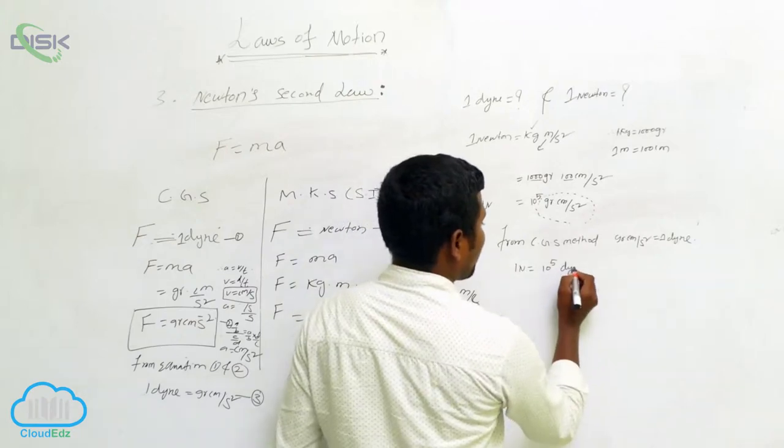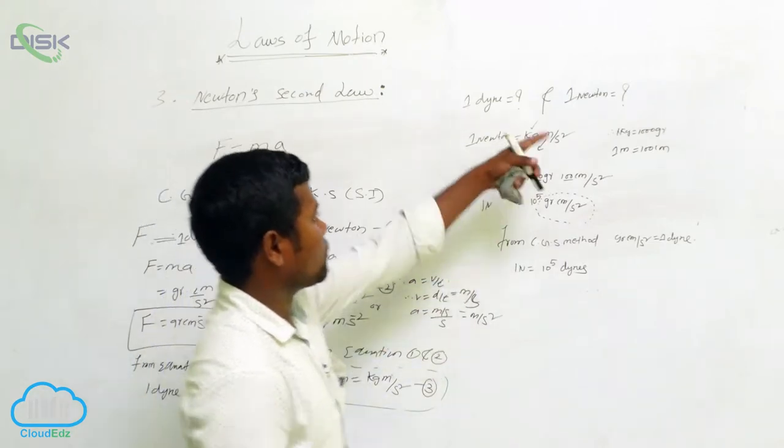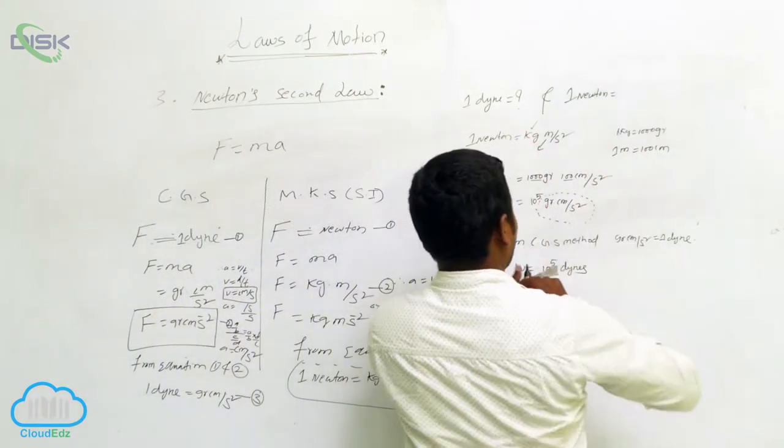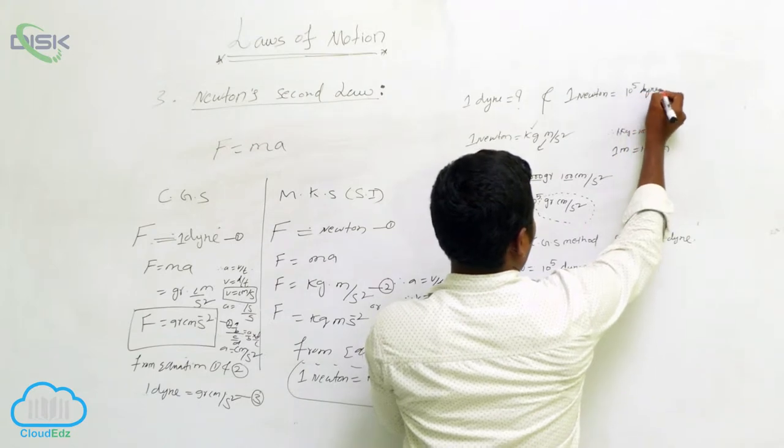1 Newton is equal to 10 to the power of 5 dynes. Now I got this value: 1 Newton equals 10 to the power of 5 dynes.